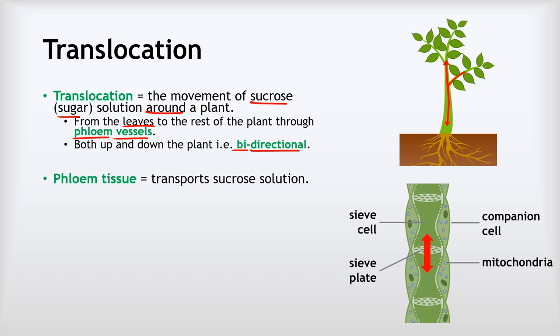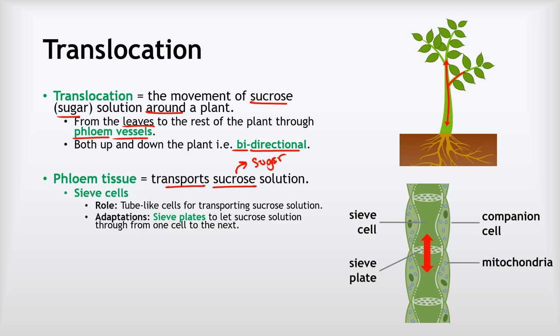Phloem tissue is tissue whose job is to transport sucrose solution. Remember, sucrose is just sugar - it's the chemical name for the kind of sugar you might put on your cornflakes for breakfast. Phloem tissue is made of two kinds of cells: sieve cells and companion cells. Sieve cells are tube-like cells for transporting the sucrose solution. You can see they've got plates that sit between each of the sieve cells - called sieve plates - which have lots of holes in them that let the sucrose solution travel easily from one sieve cell to the next.